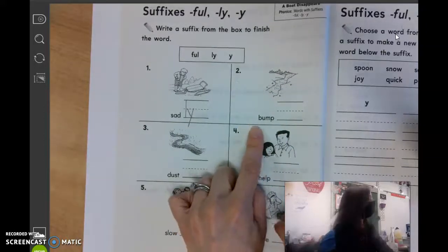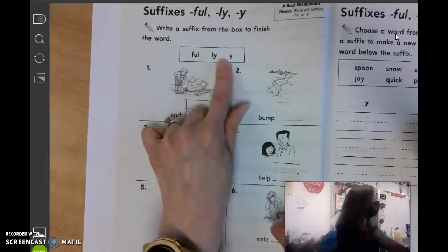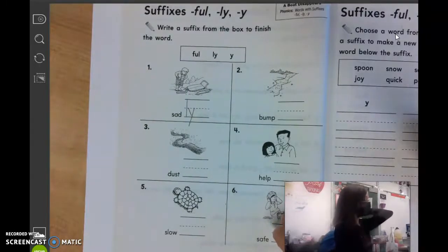Number two, we have bump. What do we add to that word? John? Y, bumpy.